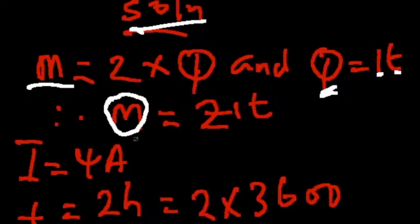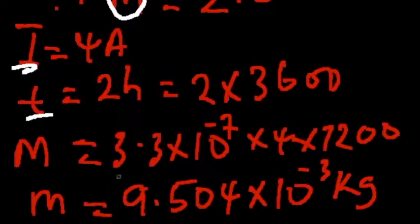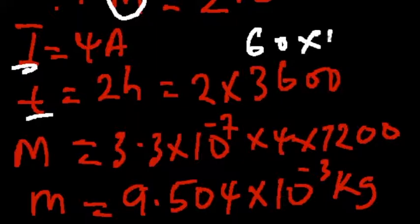So let's quickly look at these parameters. We have our current I to be 4 amperes. Our time T to be 2 hours. If we convert that to seconds, we are going to be having 2 multiplied by 3600. And how we got that is simply saying 60 multiplied by 60.